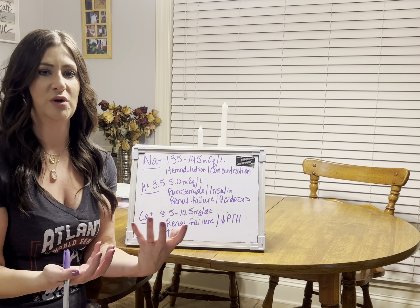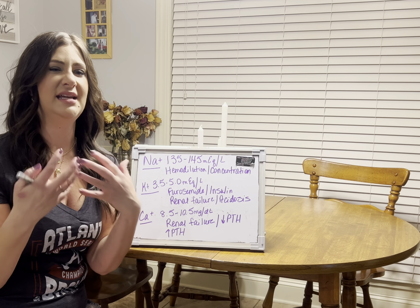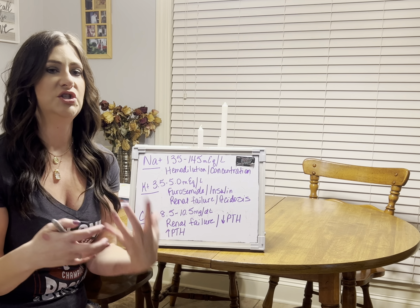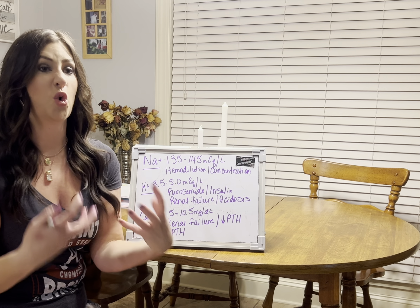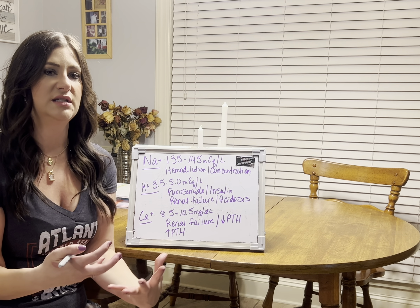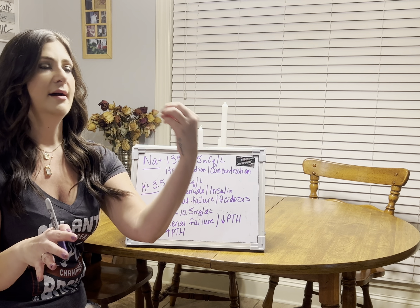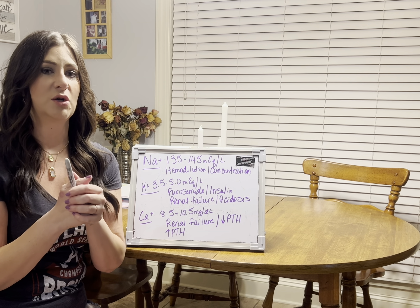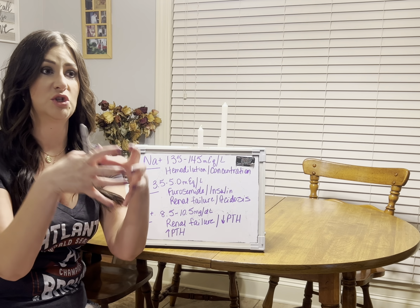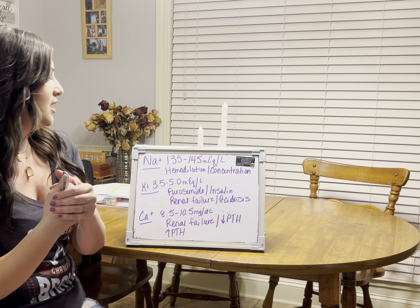With hypernatremia, the main sign is thirst — just think about eating something really salty. You can also have headache and muscle cramps, so central nervous system-type symptoms. However, with hypernatremia we're not worrying about seizures or increased ICP because cells actually shrink when sodium is elevated. With hyponatremia the cells swell, causing cerebral edema and its related manifestations.